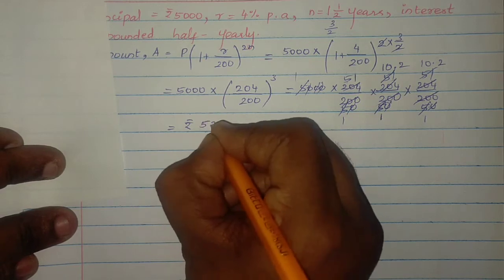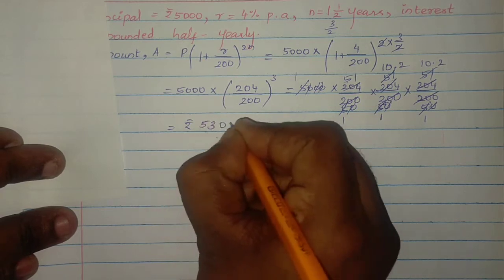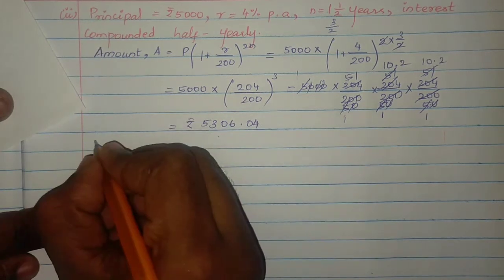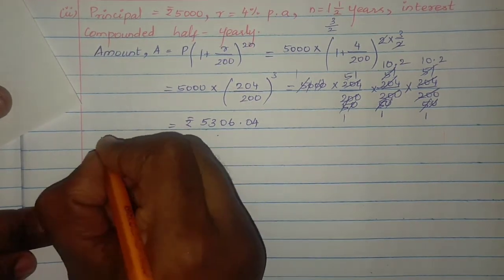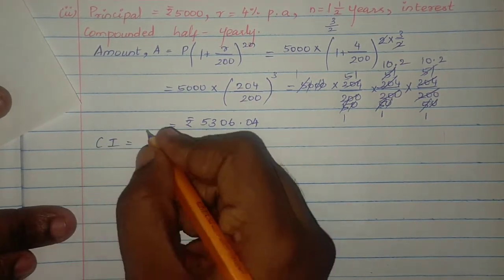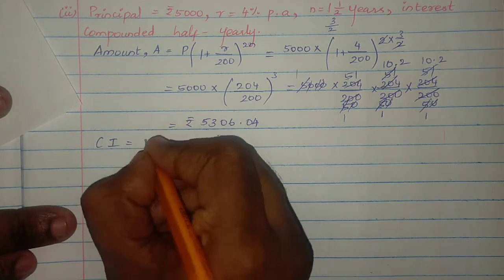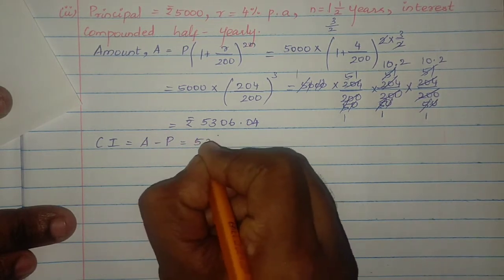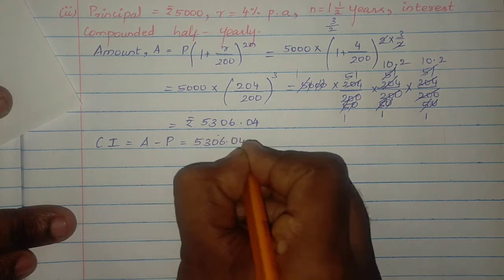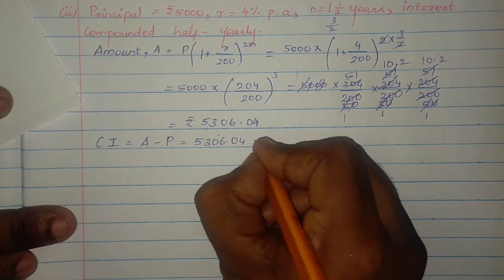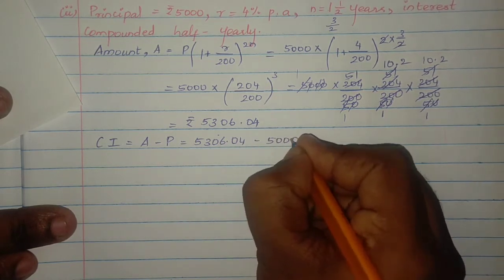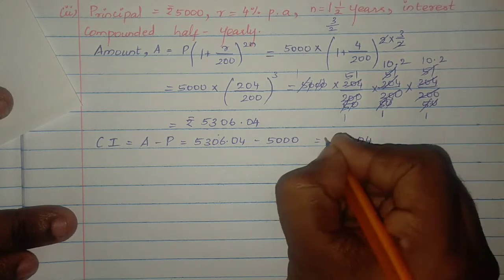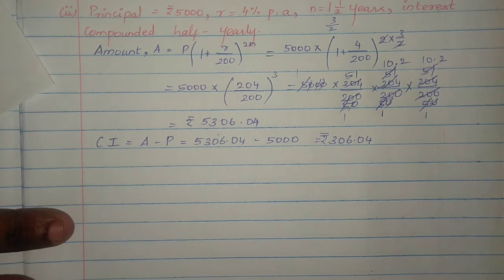So the amount is rupees 5306.04. Compound interest equals amount minus principal amount: 5306.04 minus 5000 equals rupees 306.04 compound interest.